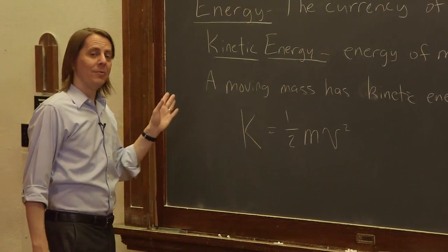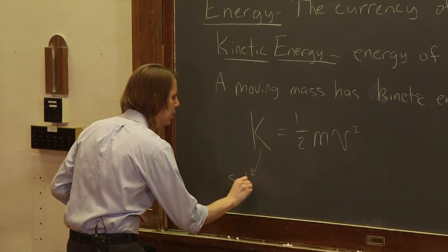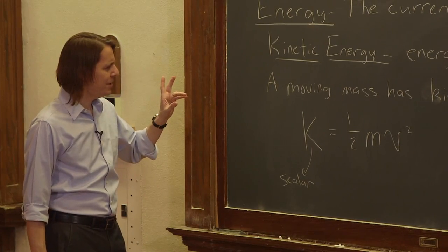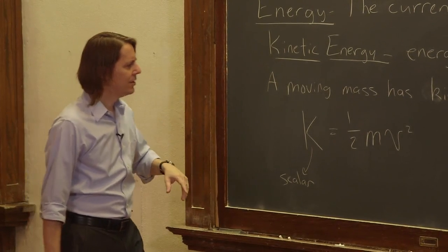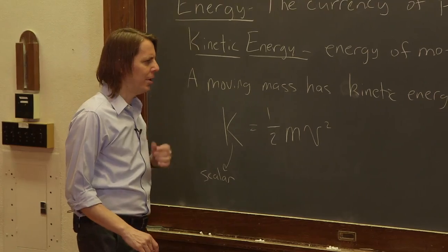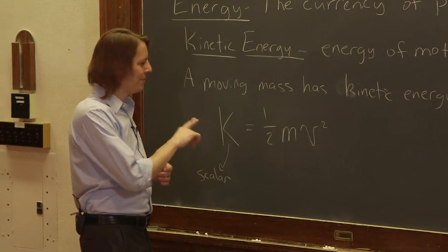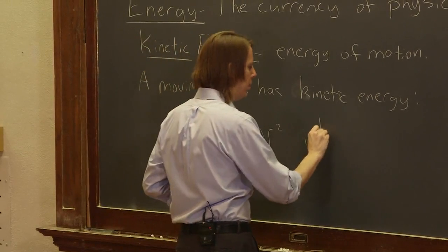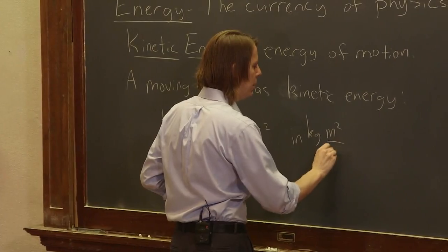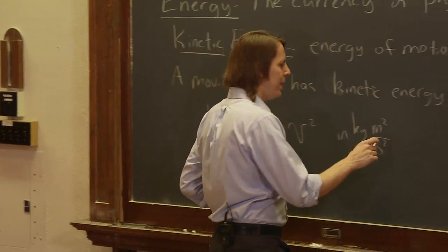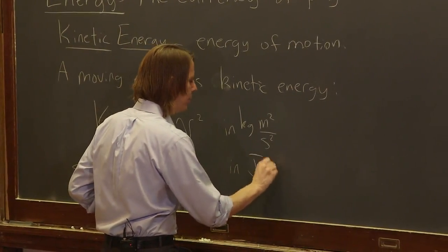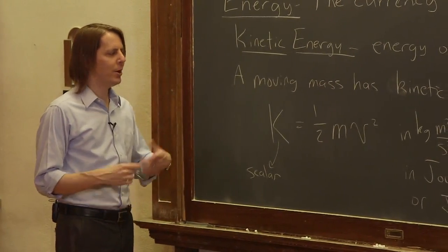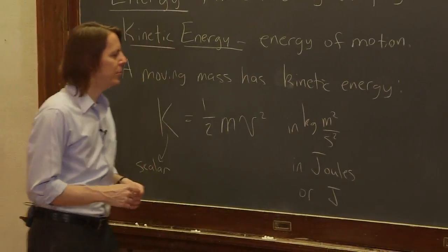One great thing about working with energy rather than forces is that energy is a scalar — no vectors to worry about. The unit of kinetic energy is kilogram meters squared per second squared, which has the special name joules, written as a capital J. You'll see all your energy in joules, or millijoules, or some variation of joules.